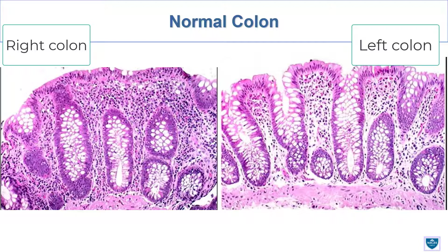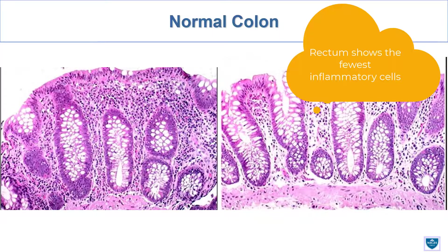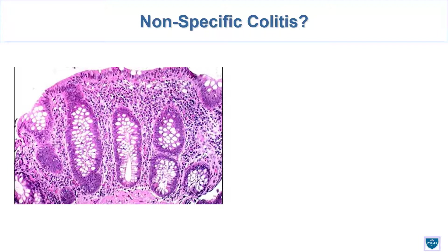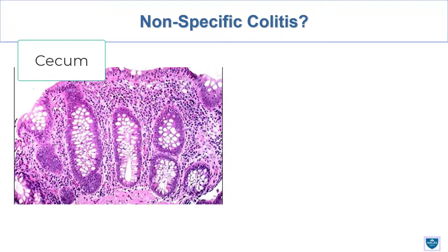The highest amount of inflammation in the lamina propria is on the right side, and it decreases consistently all the way to the rectum, where you see the fewest number of lymphocytes and plasma cells. Remember, there is no entity known as nonspecific colitis. In this particular image is the cecum, and in the cecum, you always see an increase in inflammatory cells. This is not nonspecific colitis.